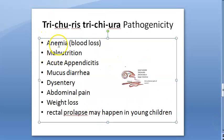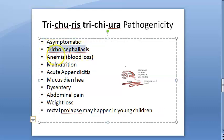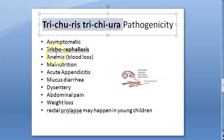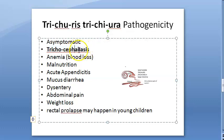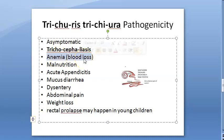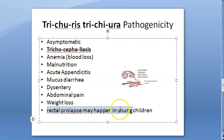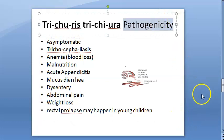Regarding pathogenicity: it is mostly asymptomatic. The condition of having Trichuris trichiura infection is called trichocephaliasis. As these worms attach to the cecum, there can be slight blood loss leading to anemia, malnutrition due to malabsorption, and they can hit the appendix causing acute appendicitis. There can be mucus diarrhea, dysentery (bloody watery stools), abdominal pain, weight loss, and rectal prolapse in young children.